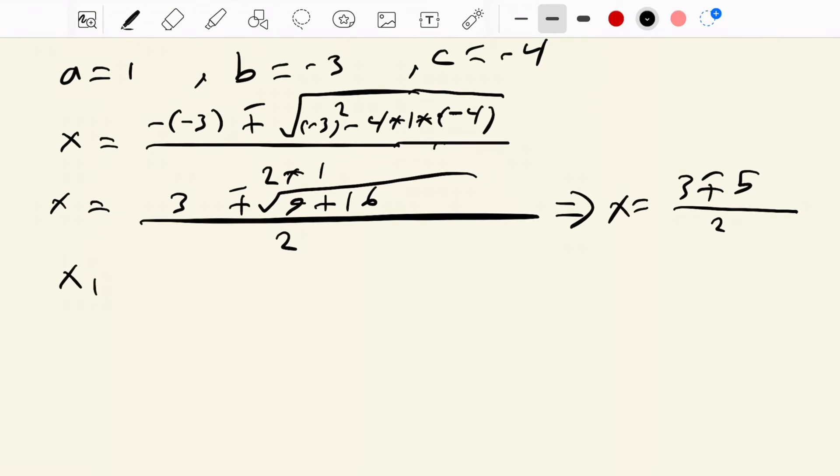So x1 equal to 3 minus 5 over 2 which equals minus 2 over 2 equals minus 1, and x2 equal to 3 plus 5 over 2 equals 8 over 2 which is equal to 4.